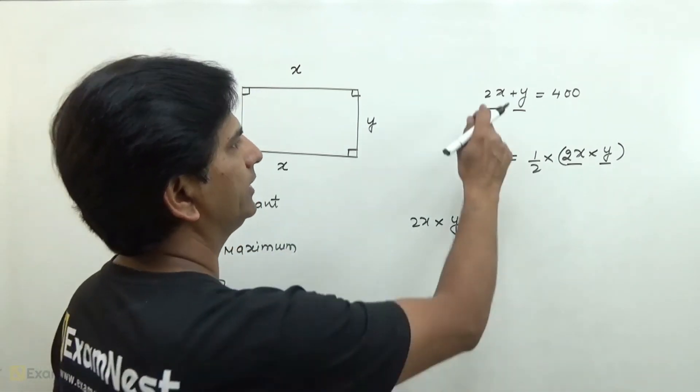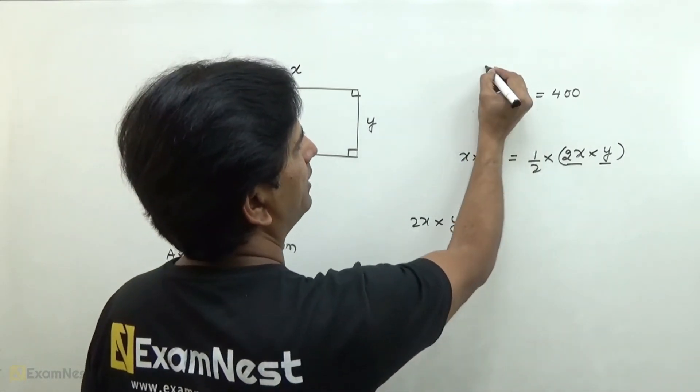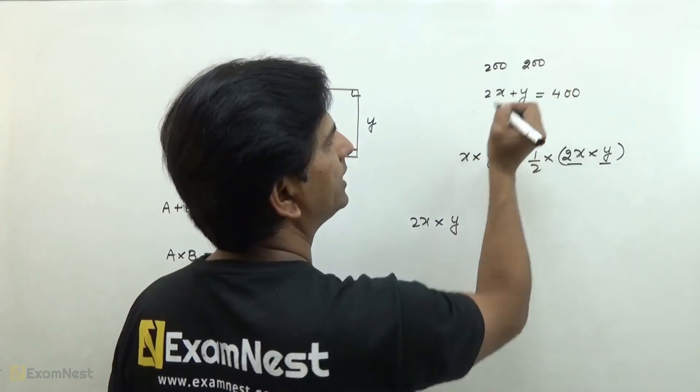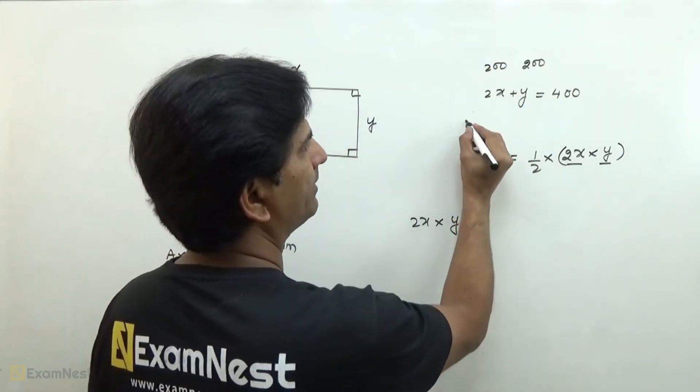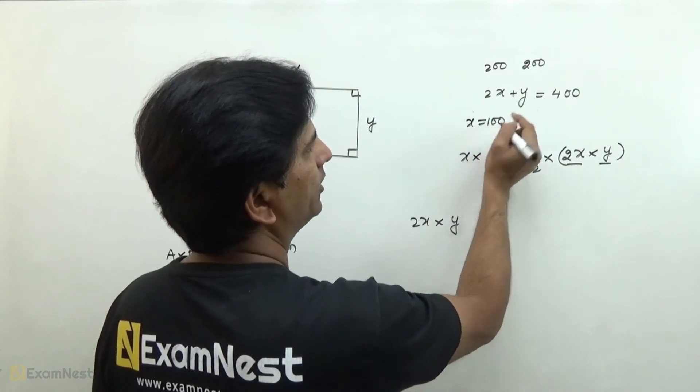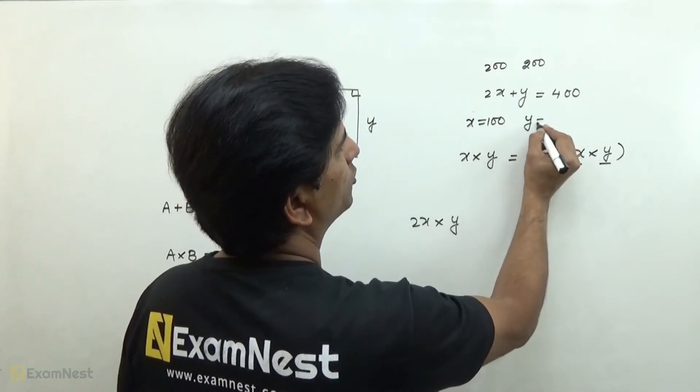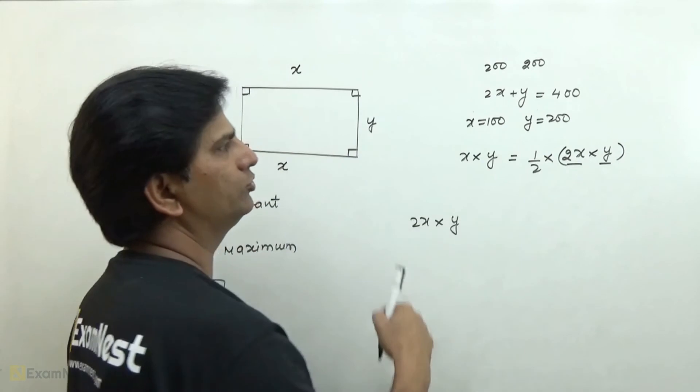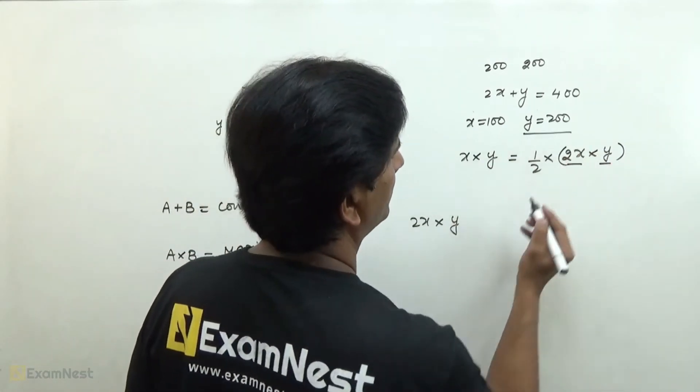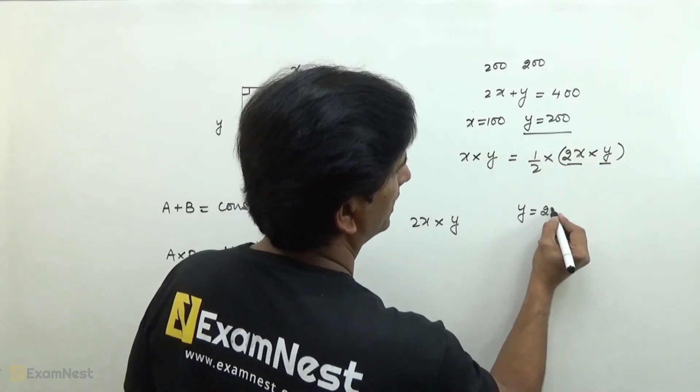Both should be equal means this value should also be 200 and this value should also be 200. This 200 means X's value is 100 and Y's value is 200. So the longer side of the rectangle will be Y and its value should be 200.